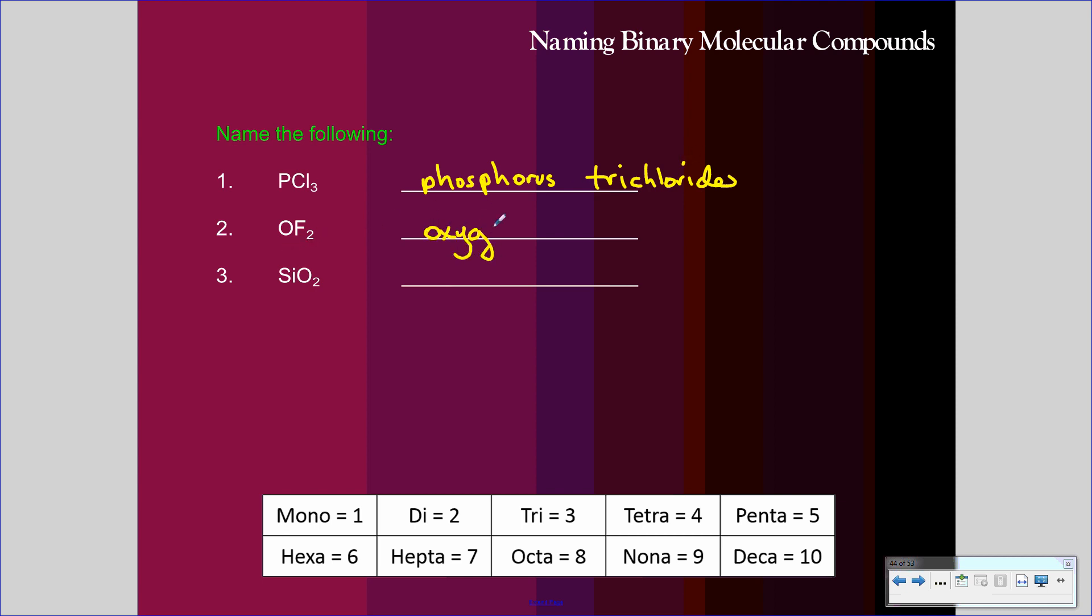Oxygen and fluorine. Oxygen, fluoride. Prefix for two is di. Oxygen difluoride. Silicon and oxygen. Silicon dioxide. And that's how you write the names from the chemical formulas for a molecular compound.